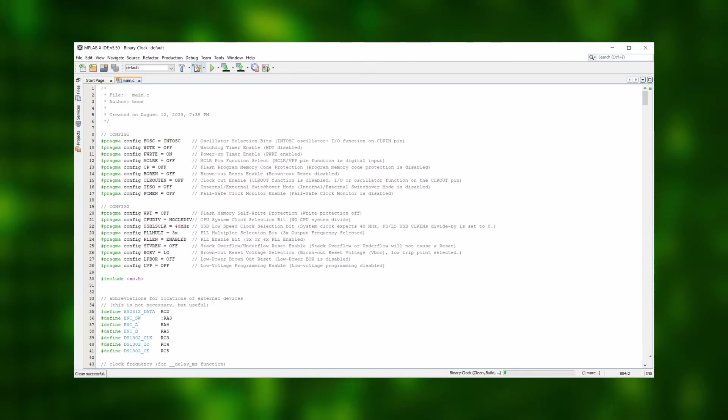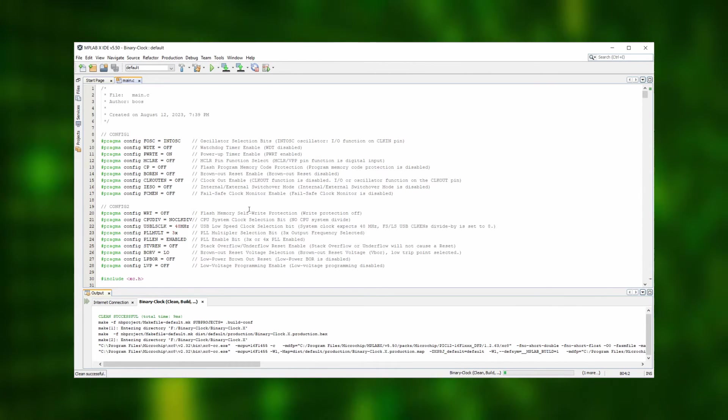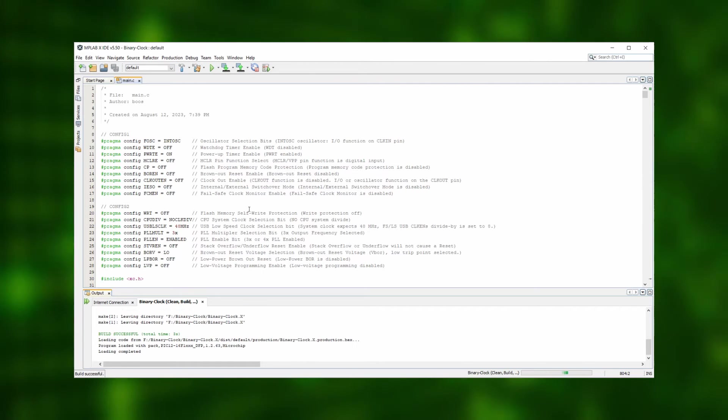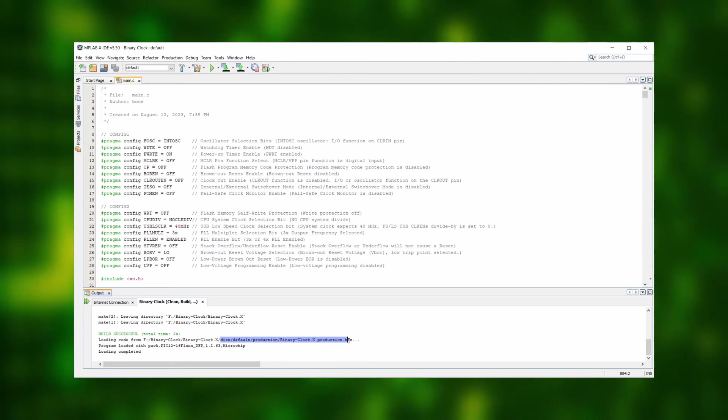Back inside the MPLAB IDE delete everything in the main.c file and then paste the source code from the website. After that, up in the toolbar, click on the compile symbol. And after a few seconds and a successful build, the compiler tells us where we can find the hex file we just created. It is in the dist default production folder of our project.